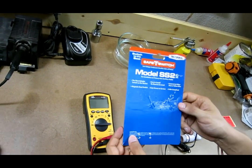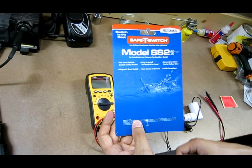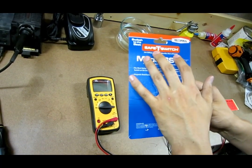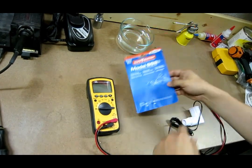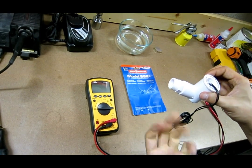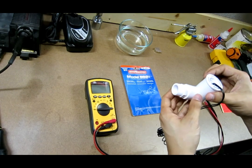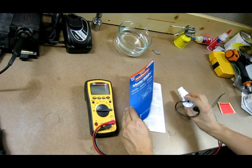So today I would like to go over a condensate overflow shutoff device. The one that I'm going over is called Safety Switch Model SS2. But all of these overflow shutoff devices basically work almost the same way.